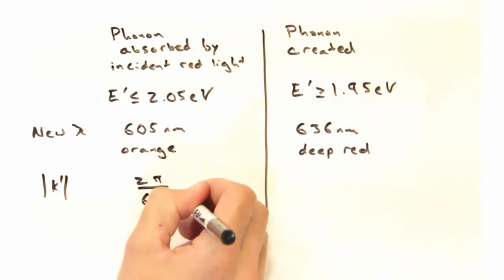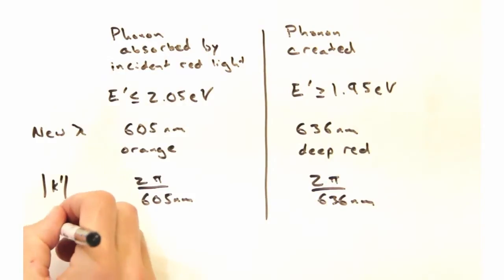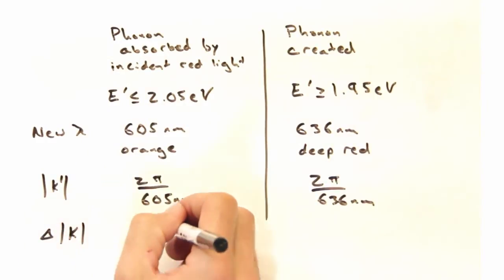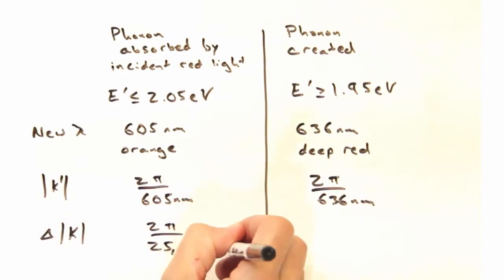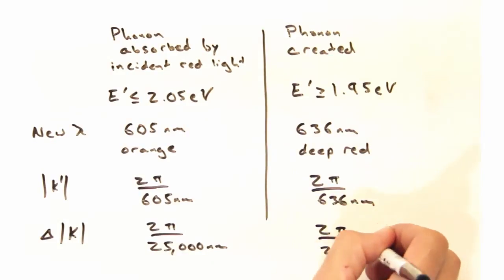We can take a look at the wavelength, so we see that the red light becomes orange or a deep red, depending on whether or not you're creating or absorbing phonons. And really, the take-home message here is in this last line,